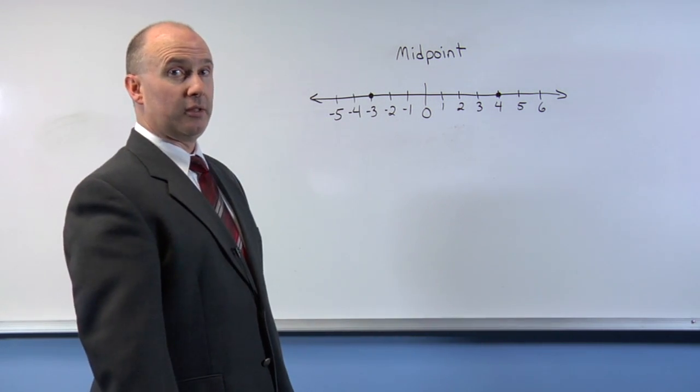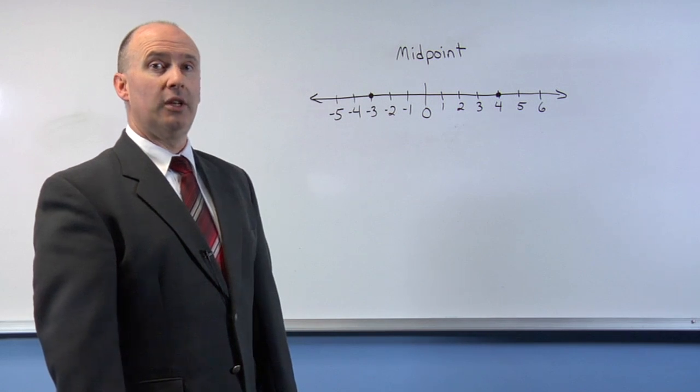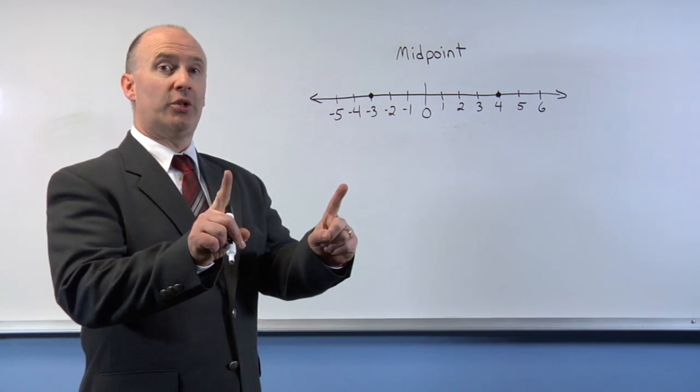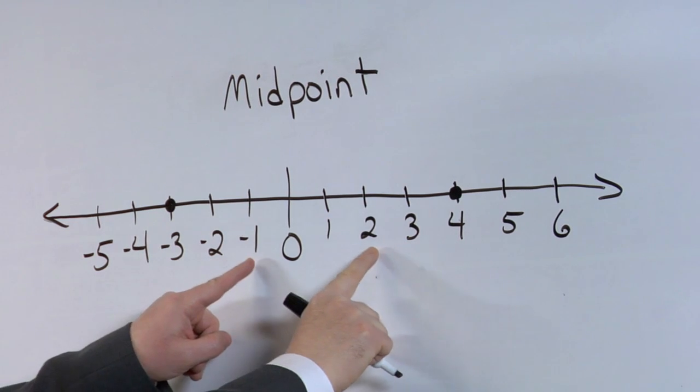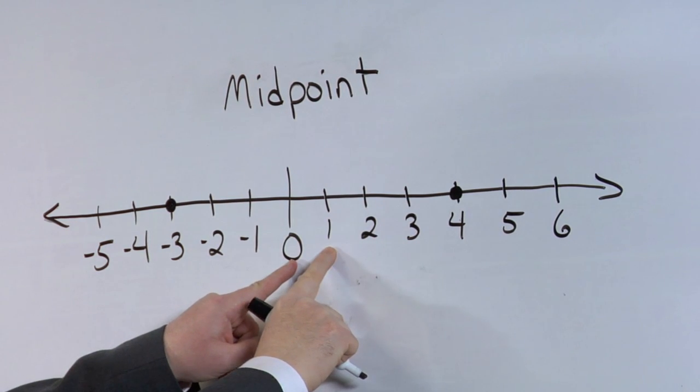One at negative 3 and the other at 4. The first method is to use your fingers and work toward the middle, the midpoint, one point at a time.